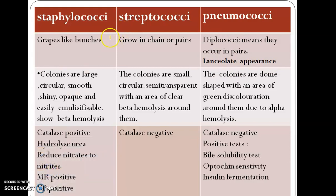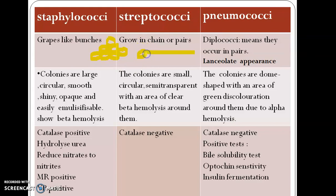Staphylococci form clusters because their cell division occurs in three axes, and the daughter cells remain in close proximity, giving a cluster-like appearance. Streptococci grow in chains of pairs because their cell division is in a single axis, and the daughter cells are not separated — this is why they grow in chains of pairs.